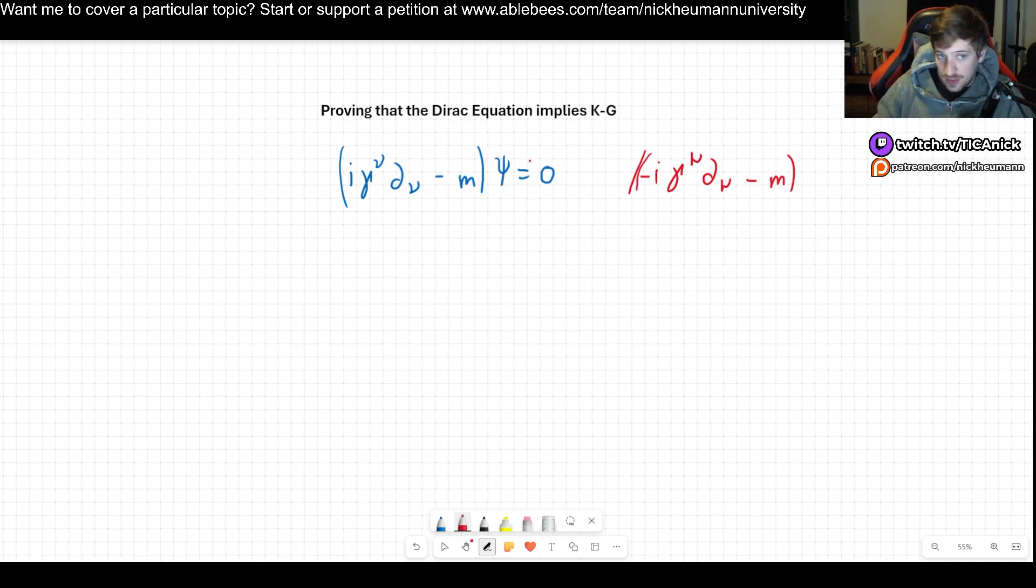We will just multiply through so we have minus I gamma mu d mu minus m and we have here I gamma nu del nu minus m psi equals zero.